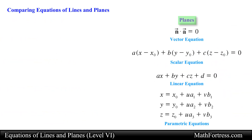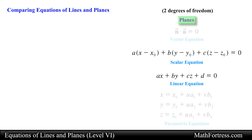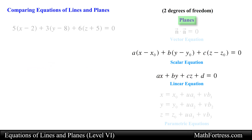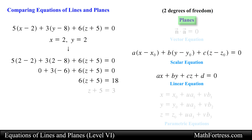On the other hand, the equation of a plane in space has 2 degrees of freedom, so we can randomly choose a value for two variables and we can determine the value of the third variable. We can essentially choose two of the three unknowns at random and solve for the third unknown. For example, in the following scalar equation of a plane, if we let x equal 2 and y equal 2, then we can solve for the value of z.